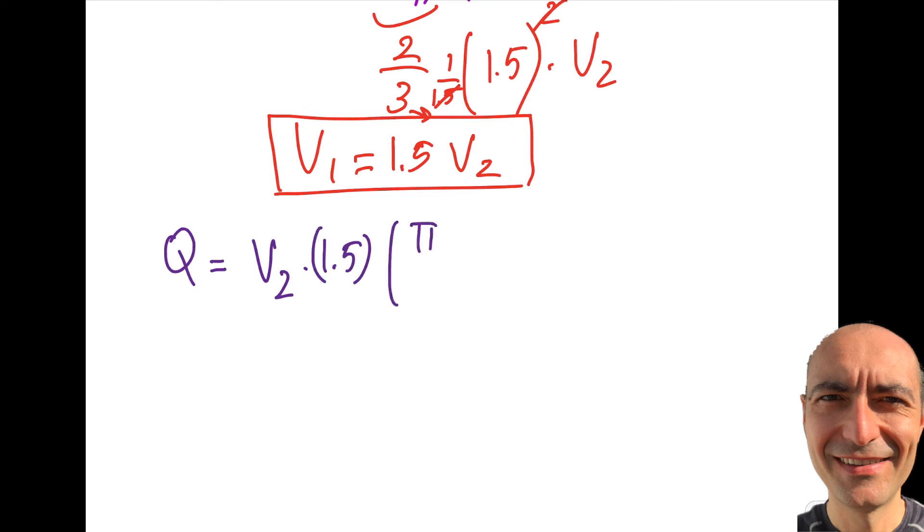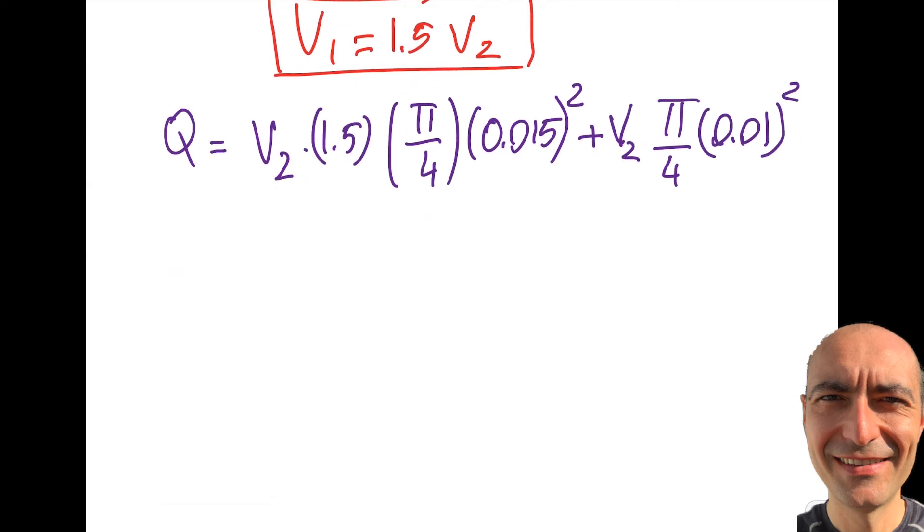Let's go and rewrite this. Q will be equal to V1, which is V2 times 1.5, and area 1 was pi over 4 times 0.015 squared plus V2 pi over 4 times 0.01 squared. So I get Q is equal to V2 pi by 4, that's going to be 1.5 times 0.015 squared plus 0.01 squared.